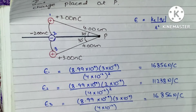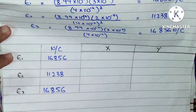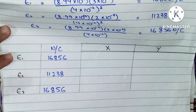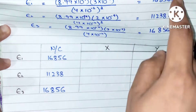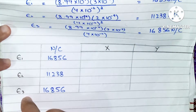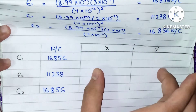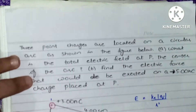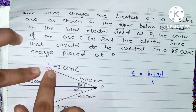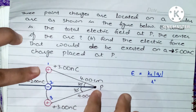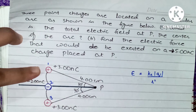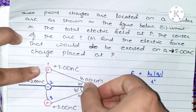Now we have to find the total electric field, and for that we make a simple table with an x-component column and a y-component column. These are the fields we found: E1, E2, and E3. We need x and y components because, looking at the diagram clearly, charge 1 and charge 3 are inclined toward point P, so they have both x and y components since they are at certain angles.